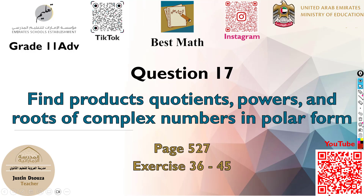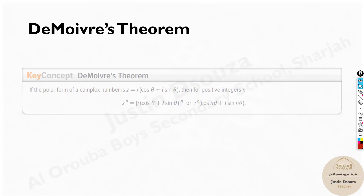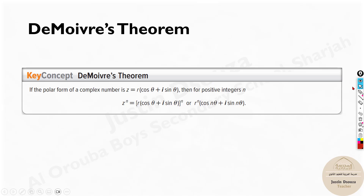Question 17 is basically on De Moivre's Theorem. It is to find the powers of complex numbers in polar form. Let us look at De Moivre's Theorem formula. This is very important to remember because without this you cannot solve it. De Moivre's Theorem requires the given question to be in polar form.